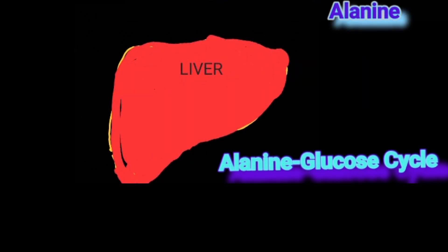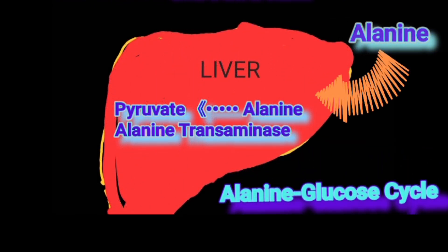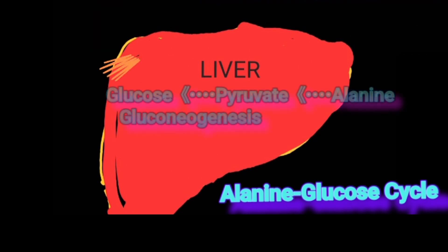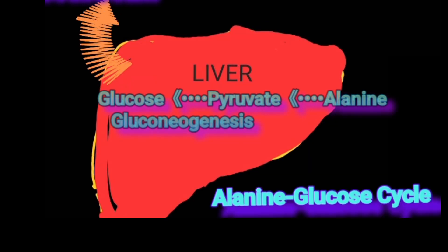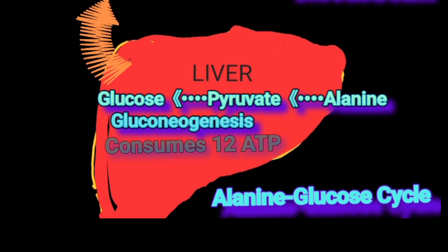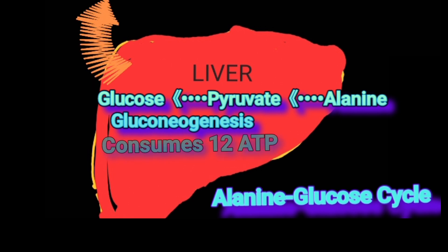Alanine can be converted to glucose by the liver by first converting it to pyruvate through alanine transaminase. Two pyruvates are then used to produce one molecule of glucose through gluconeogenesis. The synthesis of one glucose molecule from two pyruvates requires an input of 12 ATPs. As a result, glycolysis of a glucose molecule derived from alanine will produce 12 ATPs less than the maximum amount expected.